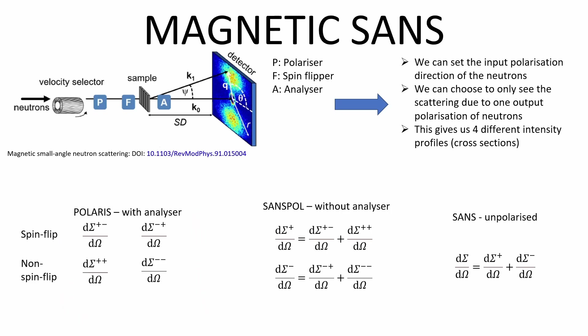We can also consider various combinations of these cross-sections. Sometimes, particular features only show up in certain cross-sections, such as in the magnetic sphere example later, because interactions with magnetised samples affect the polarisation of the neutrons.